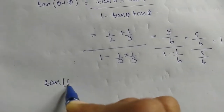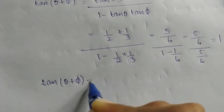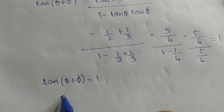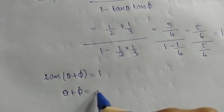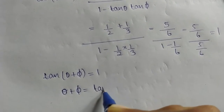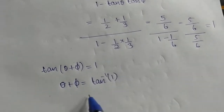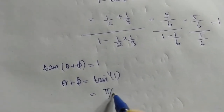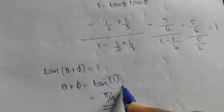Since tan(theta + phi) equals 1, taking tan inverse of both sides gives tan inverse(theta + phi) equals tan inverse(1), which equals pi/4. The answer is Option C.